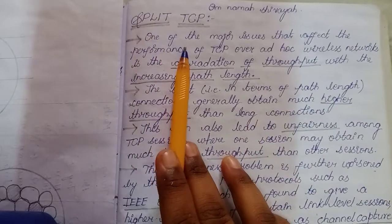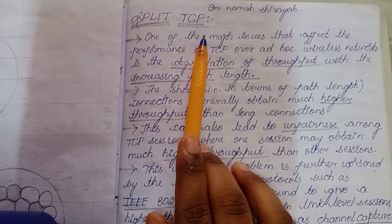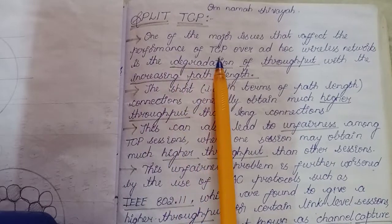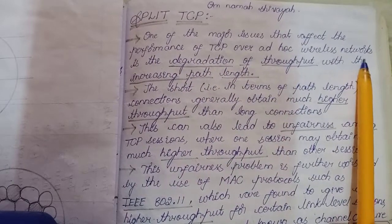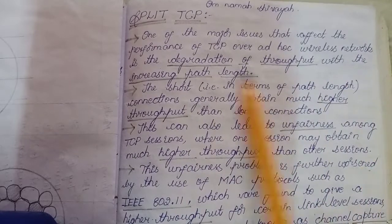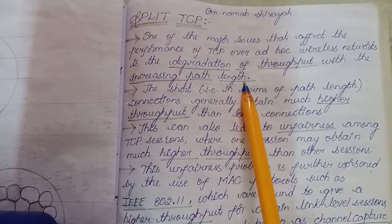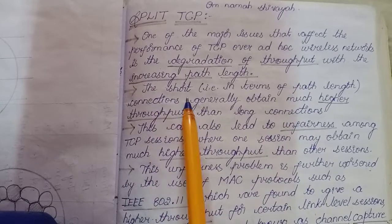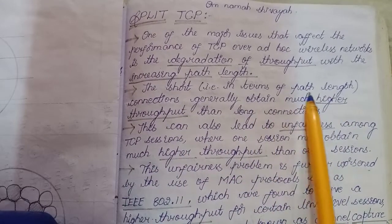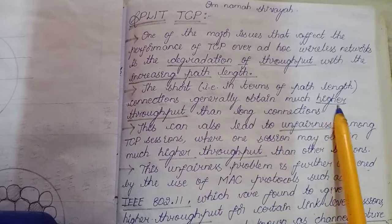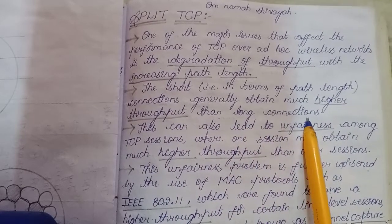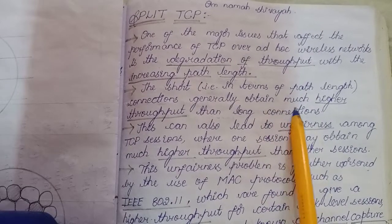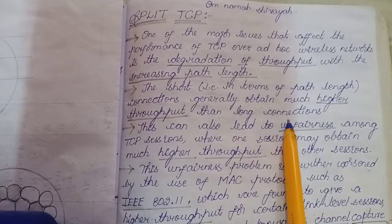In today's video we are going to learn about Split TCP. One of the major issues that affects the performance of TCP over ad hoc wireless networks is the degradation of throughput with increasing path length. As the path length between the source node and the destination node increases, the throughput of the entire network decreases. Shorter path length connections generally obtain much higher throughput than long connections.